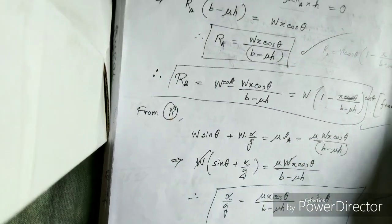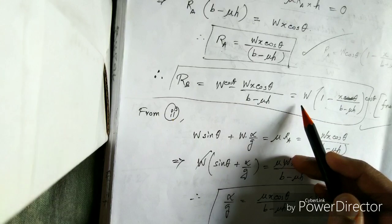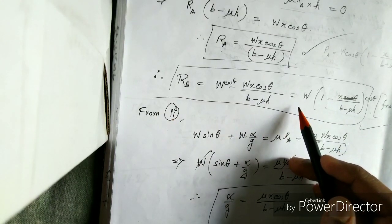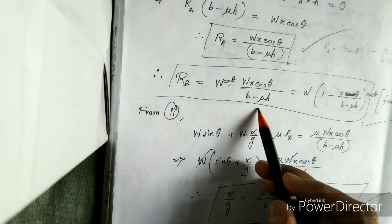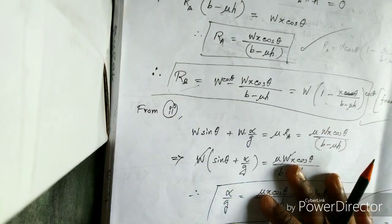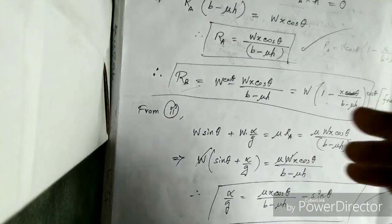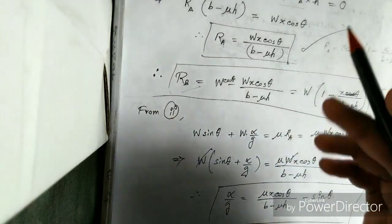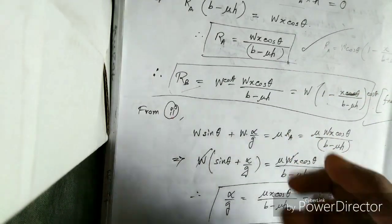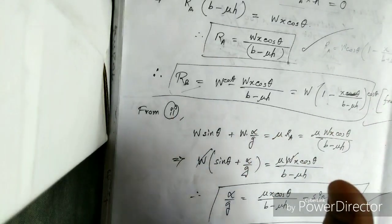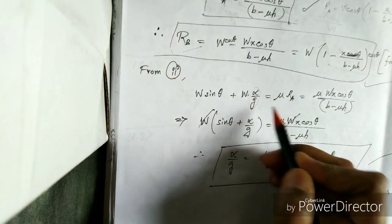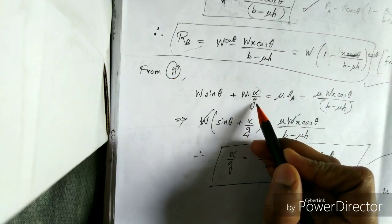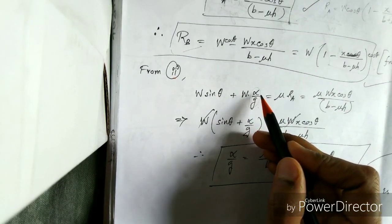There is an interesting relation if you compare the rear wheel brake case with the front wheel brake case. I will show that later in a combination chart where you can clearly compare things and remember them more easily. If you have any doubt in any of these equations you can pause the video. I will also upload the full notes in the description, so go there and check it out. Now it's time to get the value of alpha/g, which is very important.